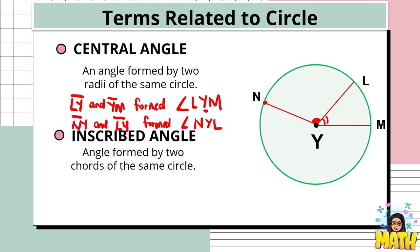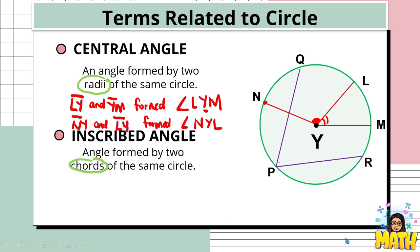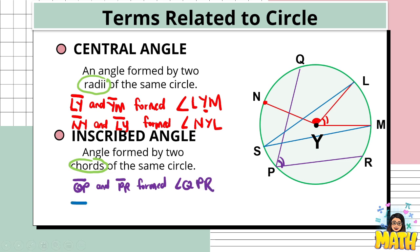Next is what we call the inscribed angle. It is an angle formed by two chords of the same circle. Central angles are formed by two radii, while inscribed angles are formed by two chords. Segment QP and segment PR are both chords and they create an angle here — this is an inscribed angle named angle QPR. Another example: segment SL and segment SM meet on the circle, forming another inscribed angle. The difference is easy to distinguish: for a central angle, the vertex is at the center; for an inscribed angle, the vertex is on the circle.